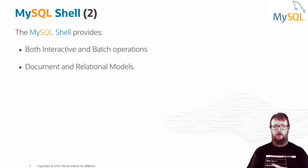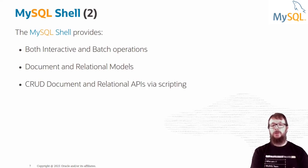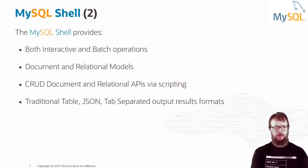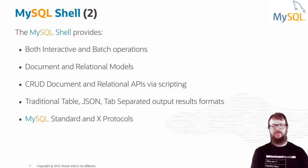MySQL Shell supports document and relational models. If you want to do document store — storing JSON and working with JSON documents directly in MySQL — it's possible using MySQL Shell. You can do CRUD operations and query the database without a single line of SQL. It supports all output formats and both the classic protocol on port 3306 and the X protocol on port 33060.